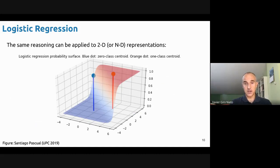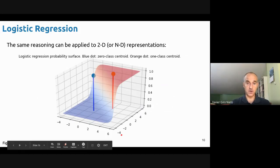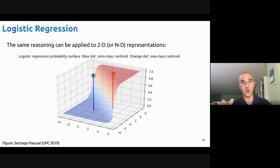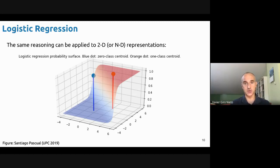The same reasoning I applied in 1D can apply to 2D input signals. Here I've drawn a 2D sigmoid that maps all values in one region to the red class and all values in another area to the zero class. In one of your first labs, you'll be learning the parameters of this sigmoid so that it can solve a classification problem — starting from logistic regression.